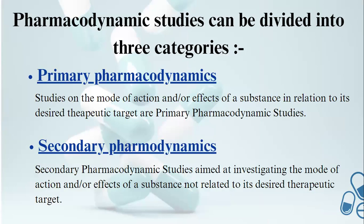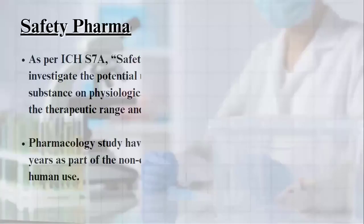Primary pharmacodynamics is the study of the mode of action or effect of a substance in relation to its desired therapeutic target. Secondary pharmacodynamic studies aim to investigate the mode of action or effect of a substance not related to its desired therapeutic target. Sometimes the primary and secondary pharmacodynamics properties of a substance may constitute a safety concern for a potential adverse effect in humans.